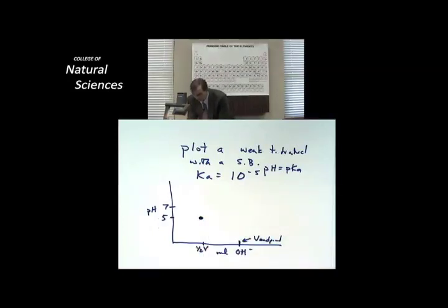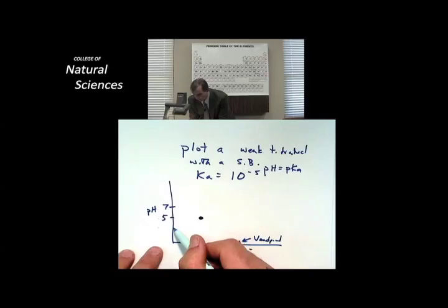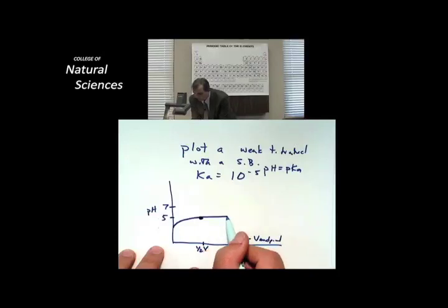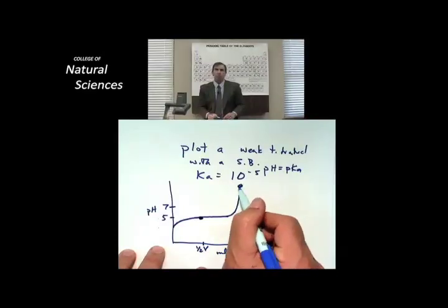Now, I know that I'm starting with a weak acid, so the pH is somewhere down in the 3, 4, 5 range. And I know that once I get over here toward the endpoint, it's going to shoot up. And I know that at this endpoint, I'm going to be at a pH which is greater than 7.